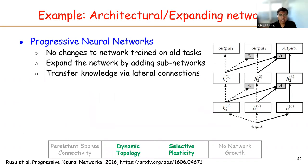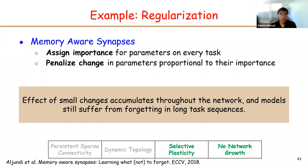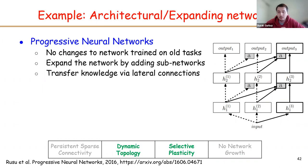Question from audience: Would synaptic intelligence go in this category? Yes, I would include it. Elastic weight consolidation would also go into this category. The second example is progressive neural networks, one of the most well-known examples of architecture methods with expanding networks.